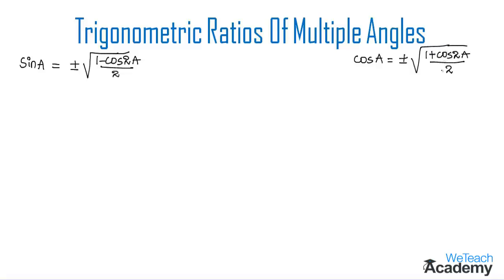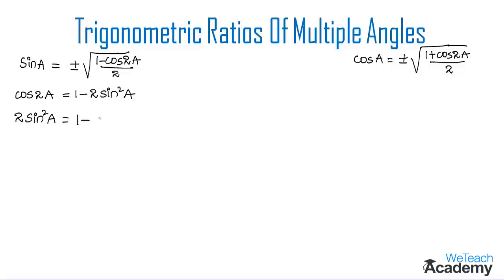So, how will you get these formulas of sin a and cos a? Let me derive the formula for sin a by using the formula of cos 2a. We already know that cos 2a is given by the formula 1 minus 2 sin square a. By using this formula, we can find the formula for sin a. By transferring cos 2a to the right hand side and 2 sin square a to the left hand side, we get 2 sin square a which is equal to 1 minus cos 2a. That implies, by transferring 2 to the right hand side, we get sin square a which is equal to 1 minus cos 2a divided by 2.